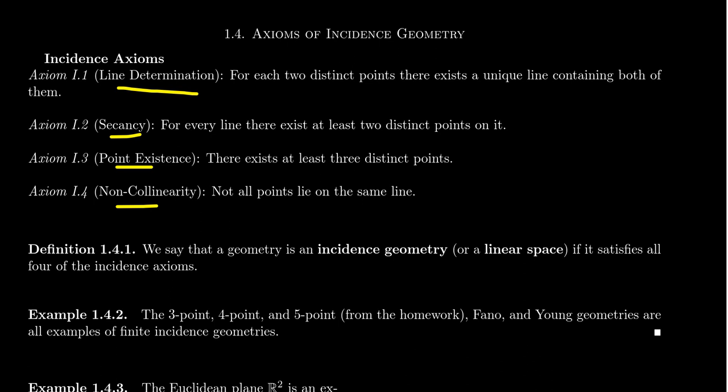Line determination tells us that given any two points, they determine a unique line — there's exactly one line on both of them. Secant C tells us that all lines have at least two points. Point existence says there are at least three points in the geometry. And non-collinearity says that the set of all points is non-collinear — there's no one line that is incident to all the points.